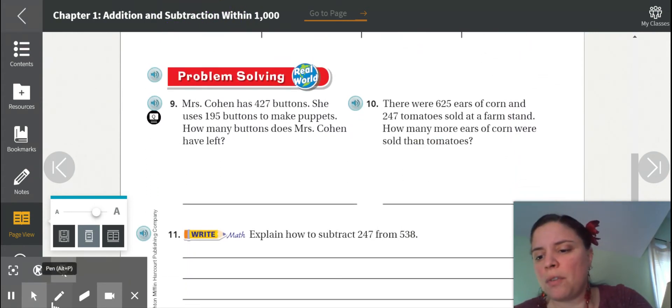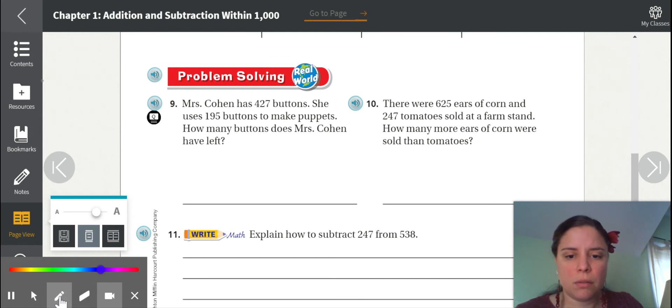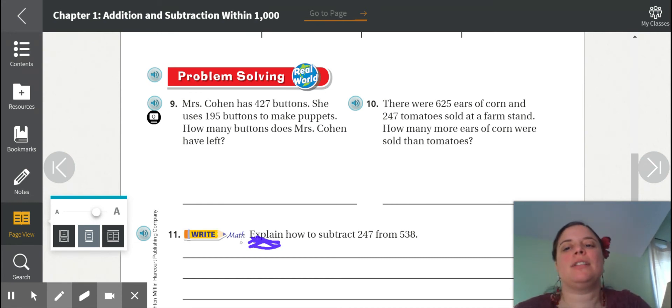All right, and let's go down to the problem solving bit. You are gonna do number 11 today. Okay. I want you to learn how to explain yourself. All right. Let's look at number 9. Mrs. Cohen has 427 buttons. She uses 195 buttons to make puppets. How many buttons does Mrs. Cohen have left?